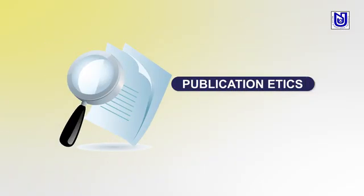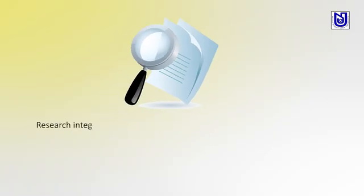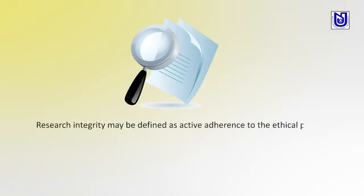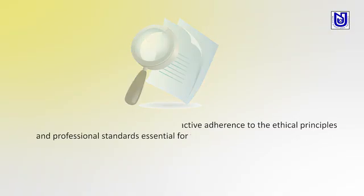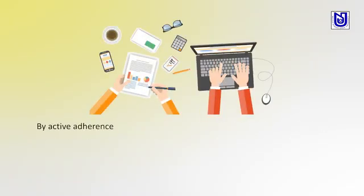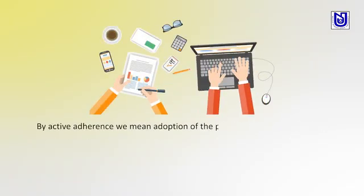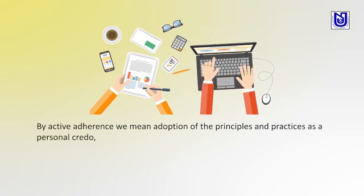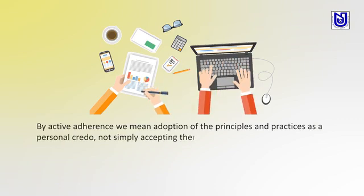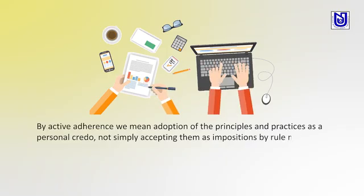The general observation of Publication Ethics is that research integrity may be defined as an active adherence to the ethical principles and professional standards essential for responsible practices of research. By active adherence, we mean adoption of the principles and practices as a personal credo, not simply accepting them as impositions by the makers.